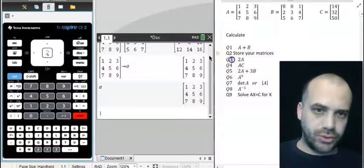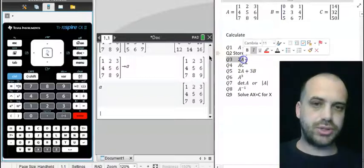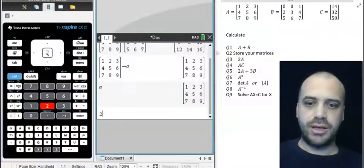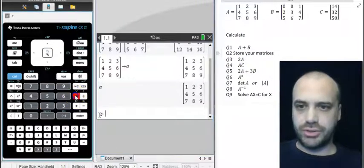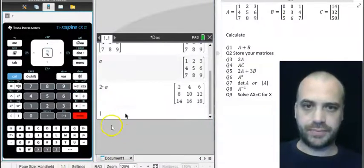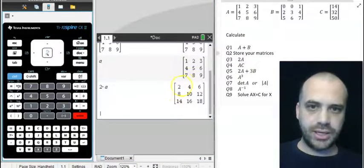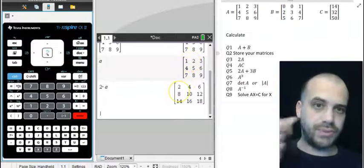If I want to do question three here, which says two times matrix A, I can really just write two times matrix A. And you can see that is in fact two times matrix A.